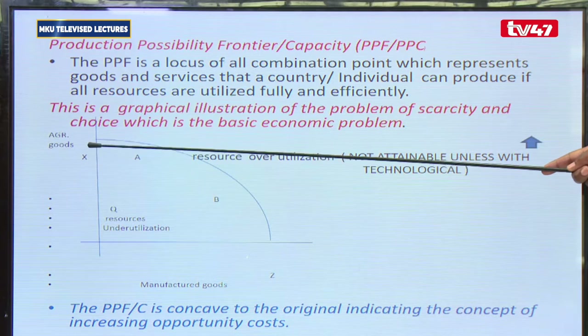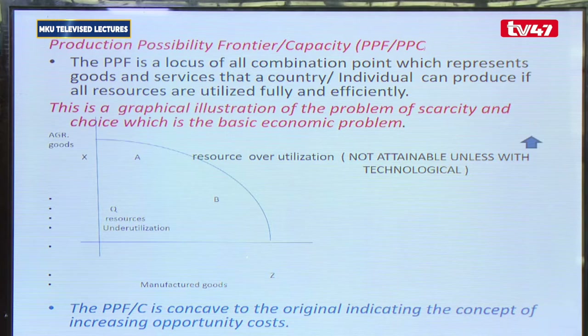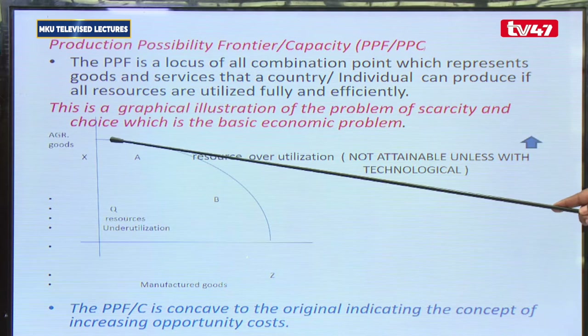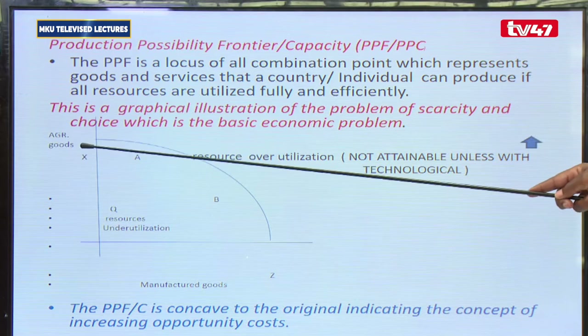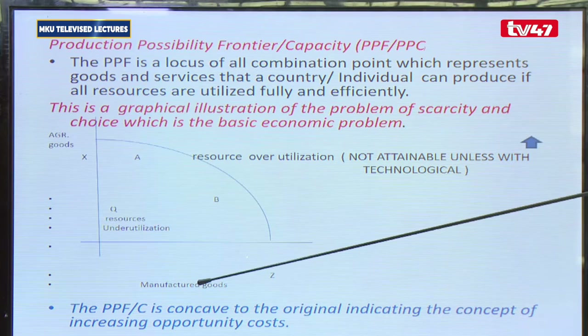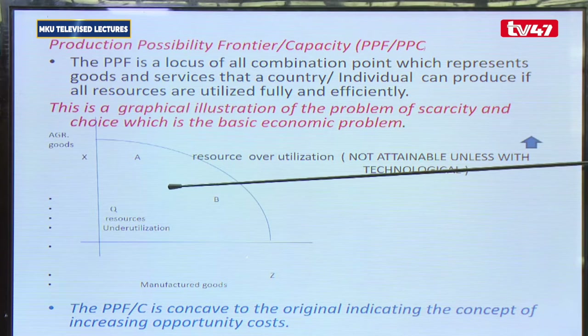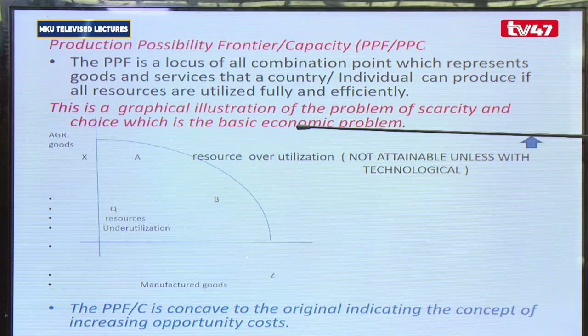The PPF — production possibility frontier — represents the capacity of a country. A country may decide whether to concentrate more in the production of manufactured goods or agricultural goods. If they increase the production of agricultural goods, the country is putting more resources there. The PPF is a locus of all combination of points representing goods and services that can be produced given full utilization of resources. When a country combines resources to produce agricultural and manufactured goods at full utilization, they move along this curve. Below this curve, resources are underutilized; above this curve, resources are overutilized — a situation that is not attainable.